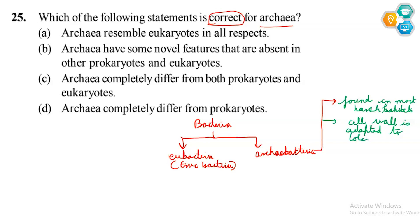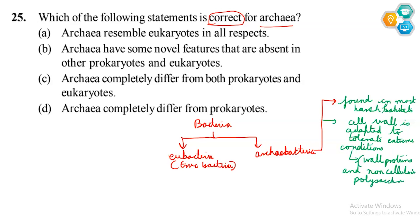They are adapted to tolerate extreme conditions. Basically, they contain certain wall proteins. There are some proteins and non-cellulosic polysaccharides — a type of sugar — present in the cell wall, which is adapted to survive in extreme conditions.